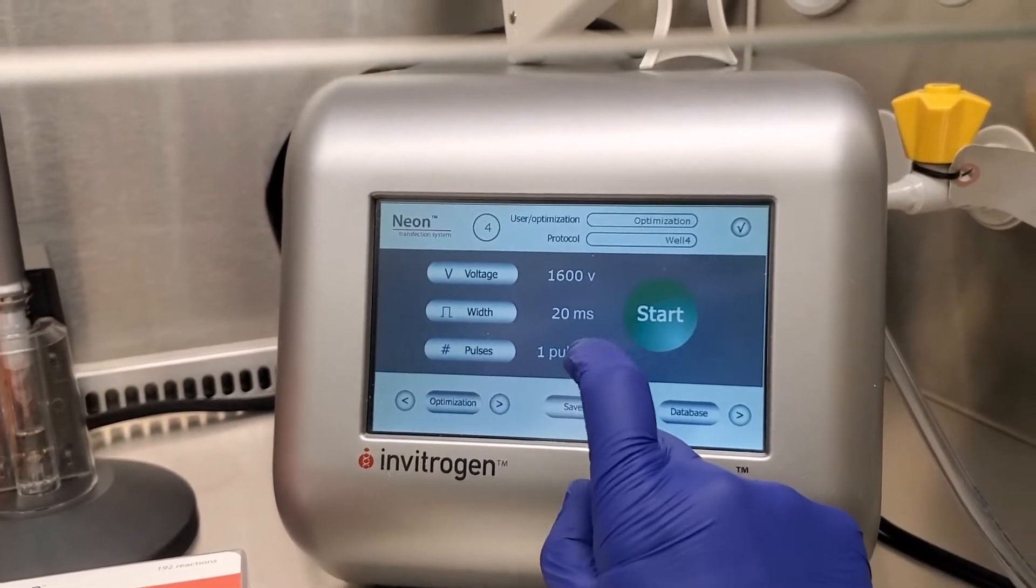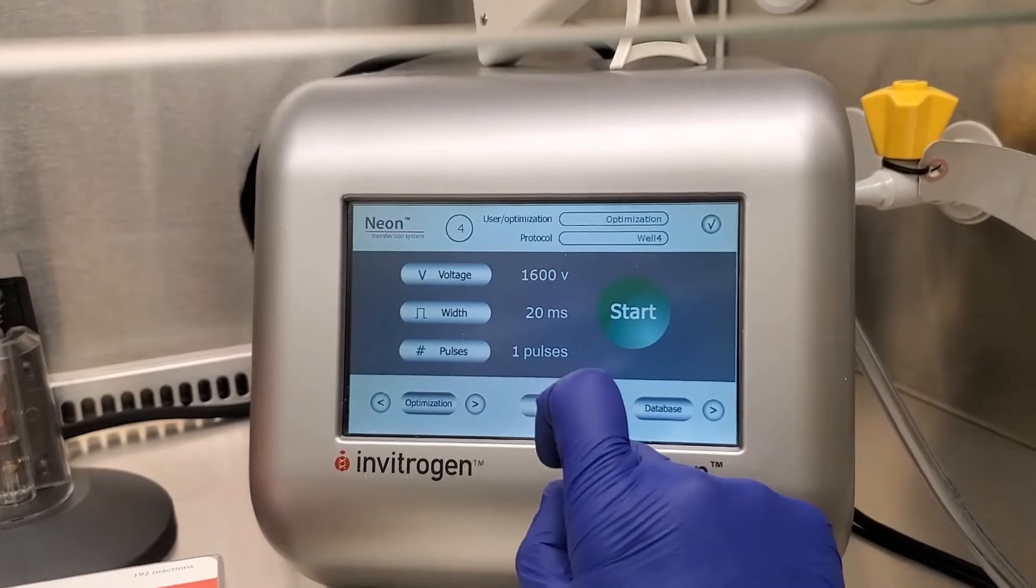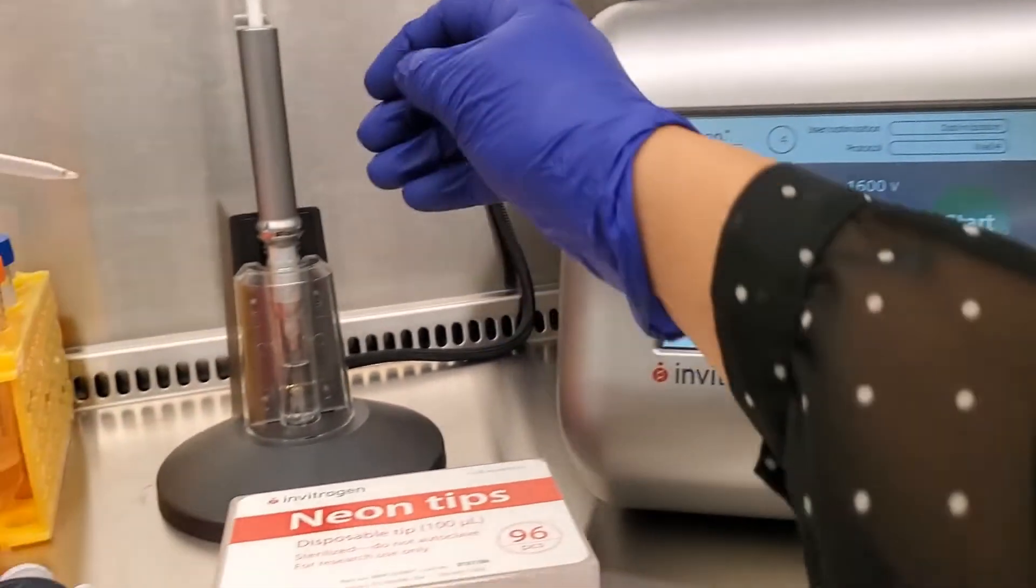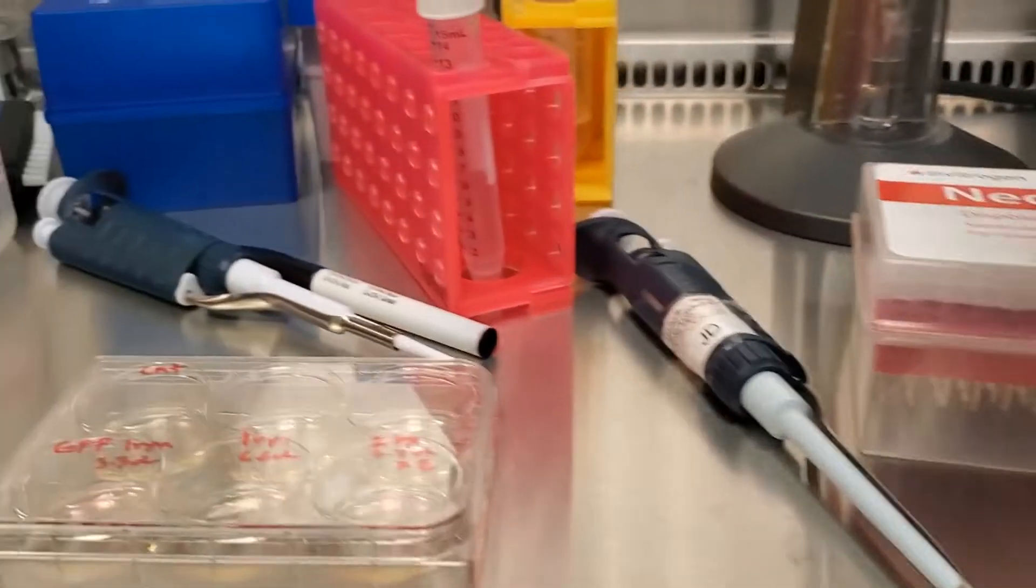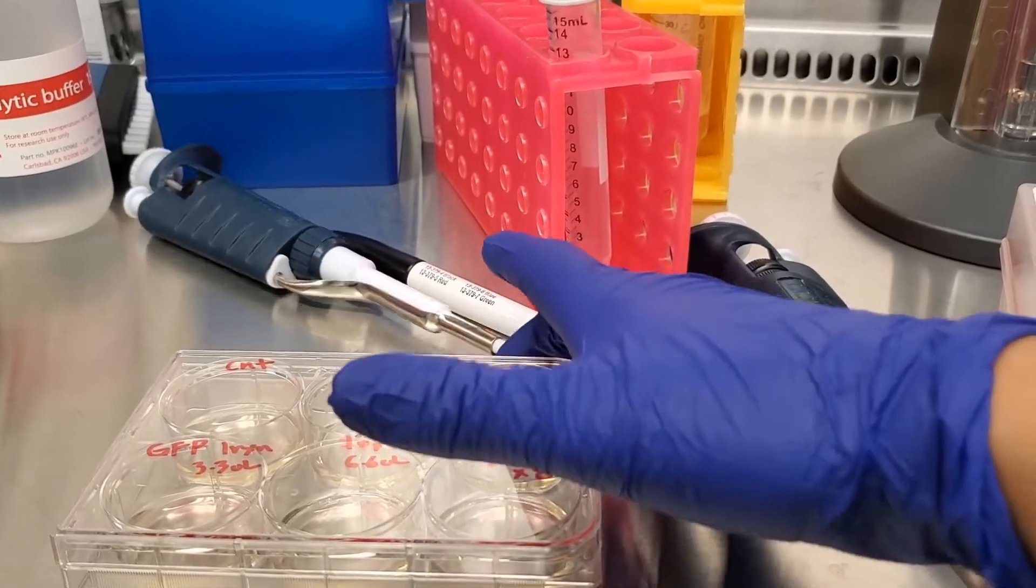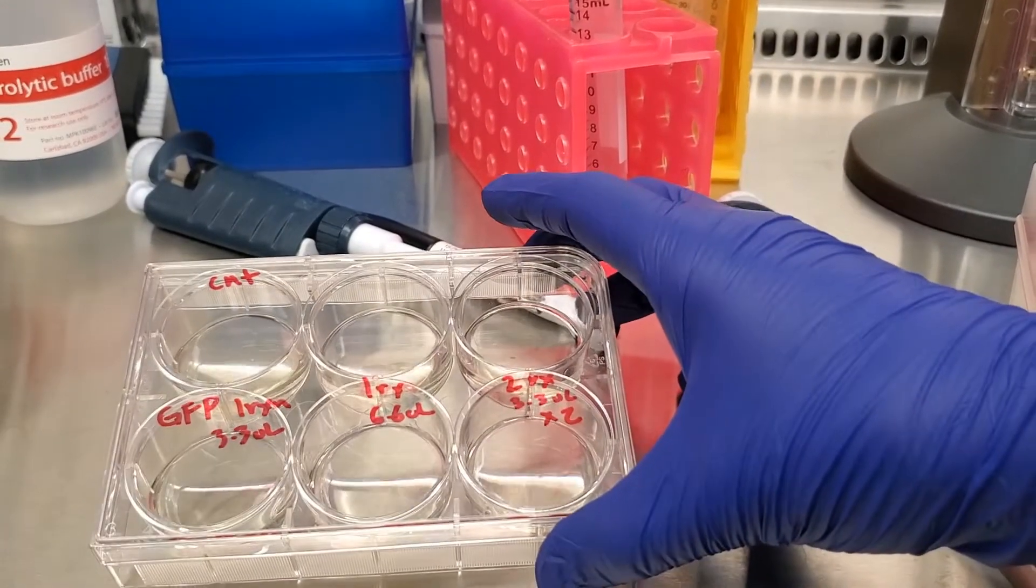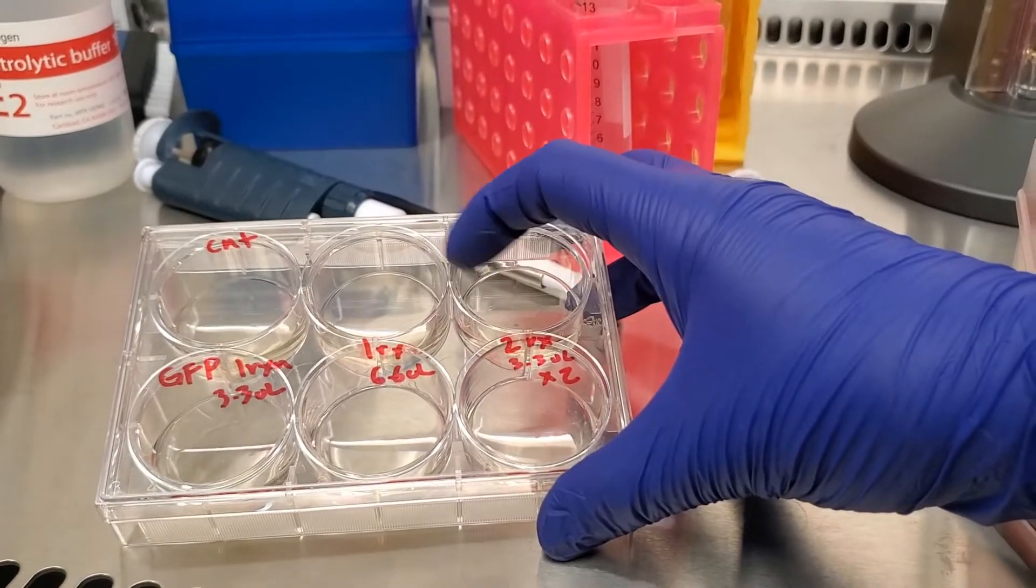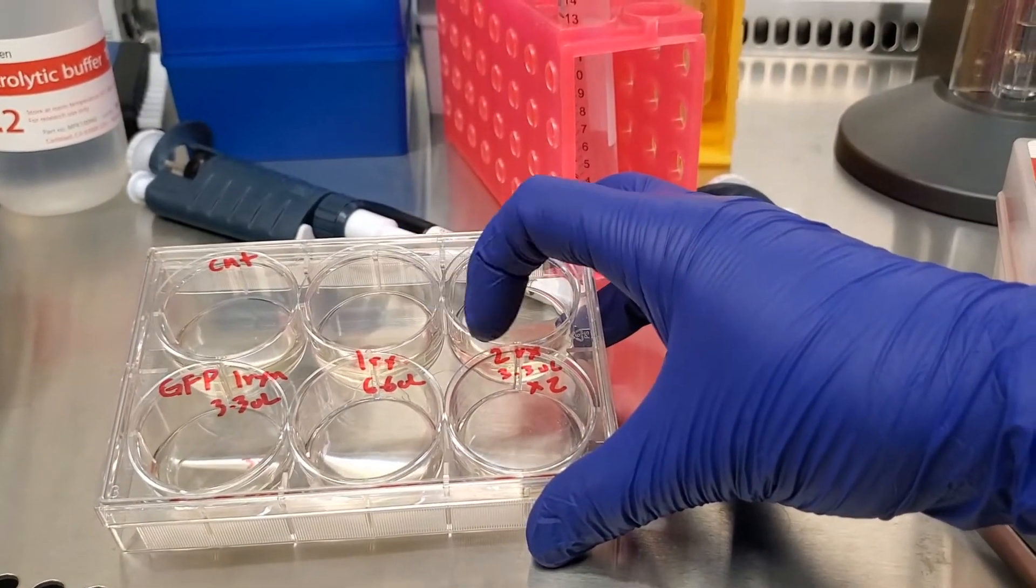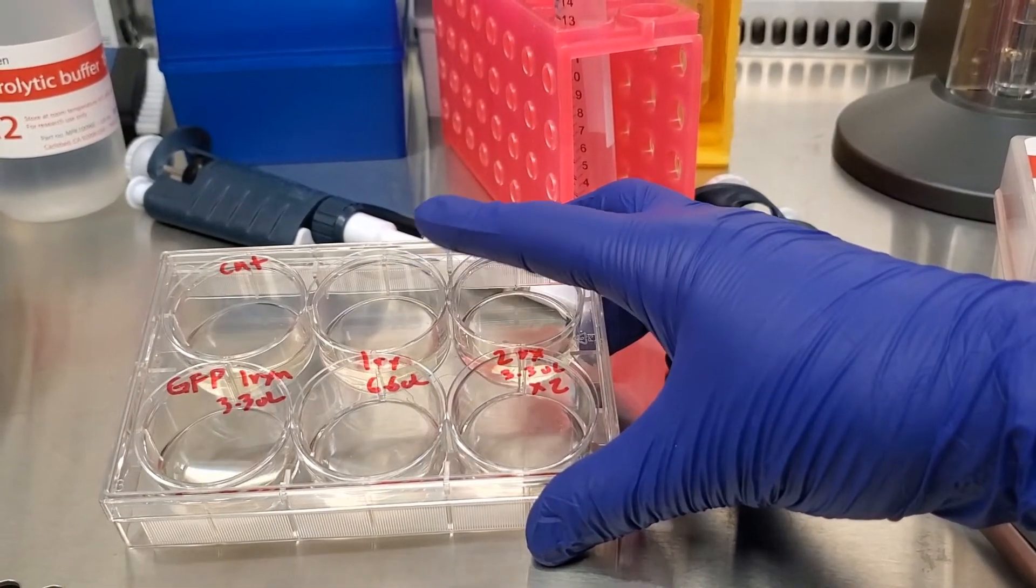My voltage that I'm trying is 1600 volts, 20 milliseconds, and one pulse. I'm testing to see how many reactions I need to get a good electroporation using the six-well plates.